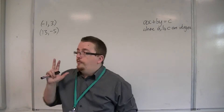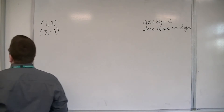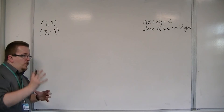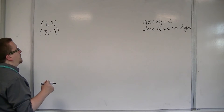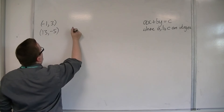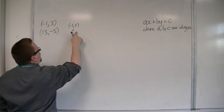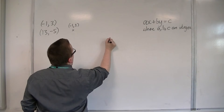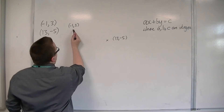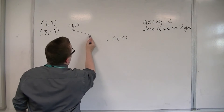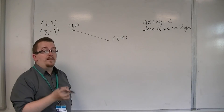First of all, it's useful to draw a little diagram to make sure you know where these points are. It's good because then you can check whether the gradient you find makes sense. So minus 1, 3 would be a point there, and 13 minus 5 would be along and down a bit, so about there. Draw the line going through them. So we can already say that it's going to have a negative gradient.